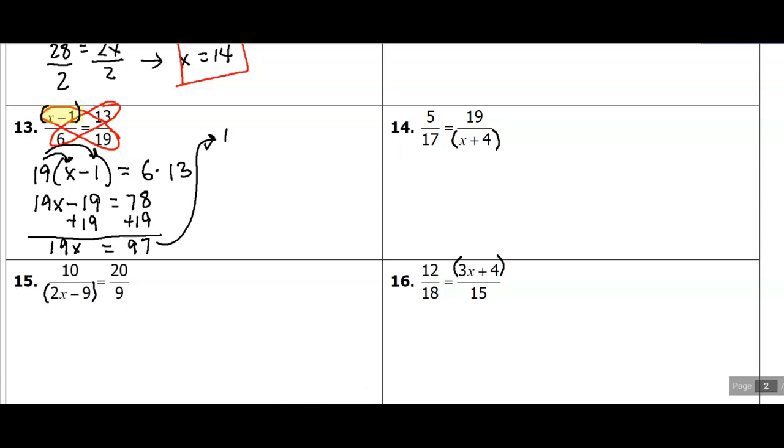And I get 19 times x is equal to 97. So let's continue up here. 19x is equal to 97. Divide both sides by 19. And in this case, I get that x is 5.1. So we're not always going to get a whole number for an answer. So there's no need to worry about that.